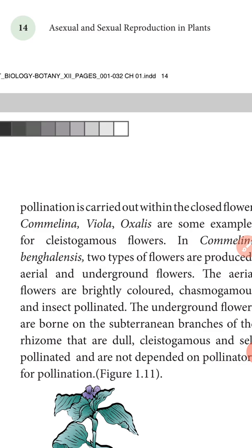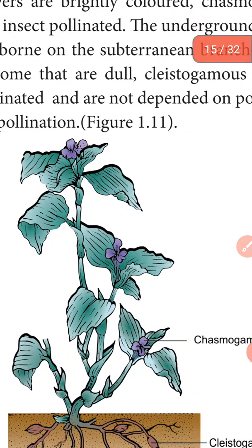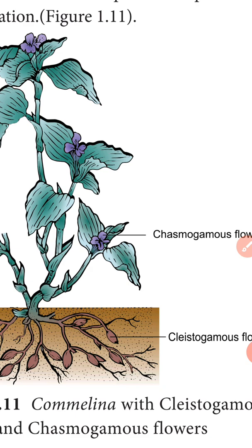In Commelina benghalensis, the plant produces two kinds of flowers: one aerial and one underground. The aerial flower is brightly colored and chasmogamous — insect pollination occurs there. The underground flowers are produced in the rhizome, are dull in color, and self-pollination occurs without depending on pollinators.